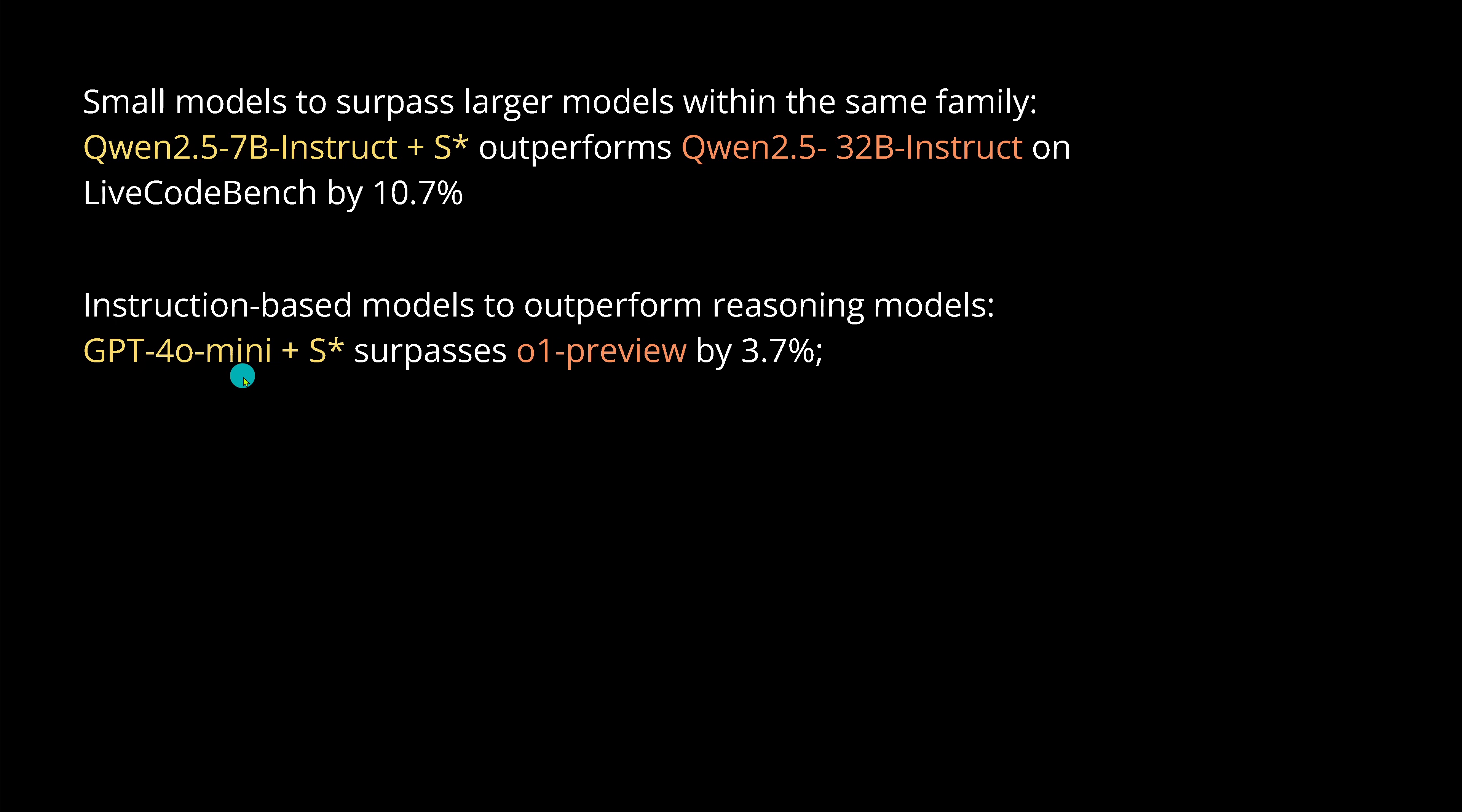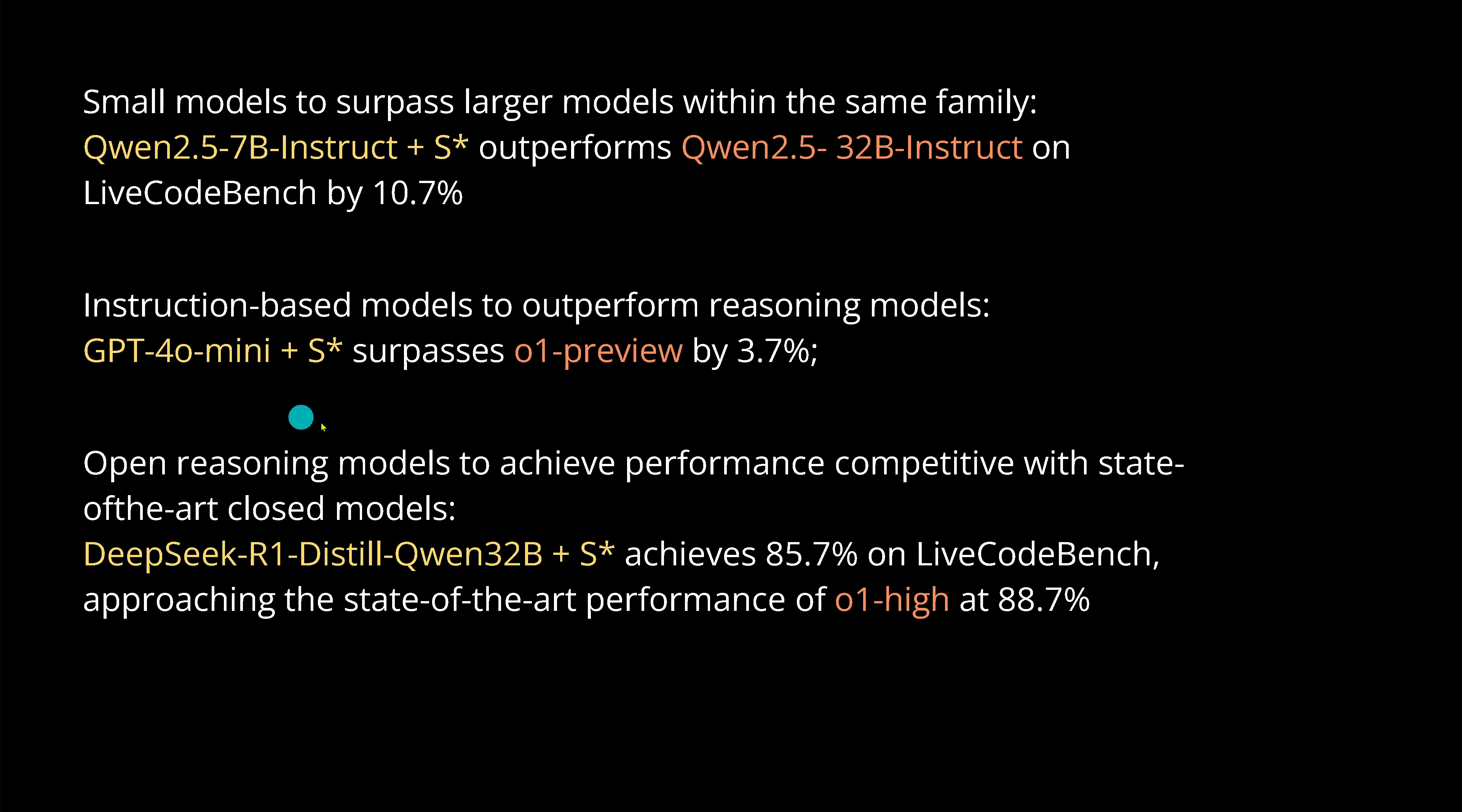If you go with GPT-4 Omni Mini and S-Star, this surpasses the O1 Preview. If you have open reasoning models to achieve performance competitive to state-of-the-art proprietary closed models, DeepSeek R1 Distilled QwQ-32B with S-Star comes close to state-of-the-art OpenAI O1 High model. The achievements are really impressive, and especially if you want to act locally or even in the cloud. If you get a 10 to 20 boost in your accuracy performance for code generation, this is something you should use.